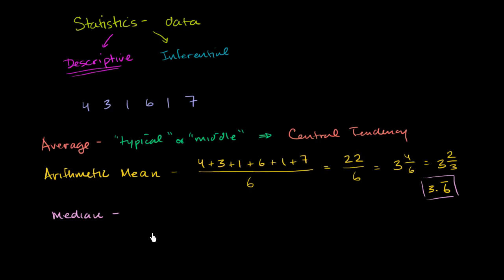Let's try to figure it out. Let's try to order it. So we have 1, then we have another one, then we have a 3, then we have a 4, a 6, and a 7. So all I did is I reordered this. And so what's the middle number?